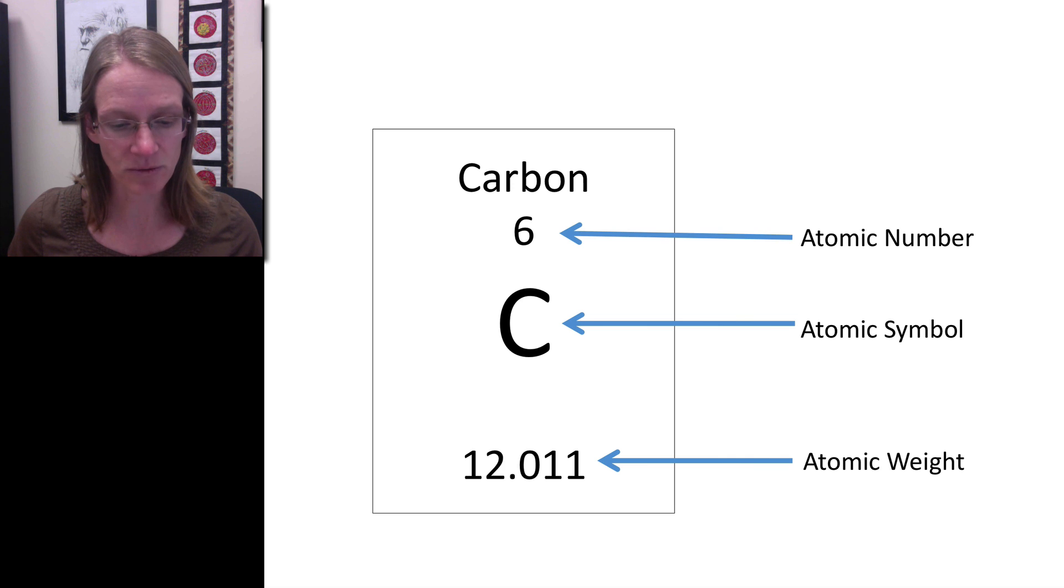The bottom number is the atomic weight, which is the weight of the atom. Remembering that neutrons weigh one amu and electrons weigh nothing, in this particular case the atomic weight is 12.011.